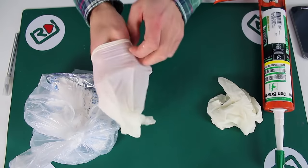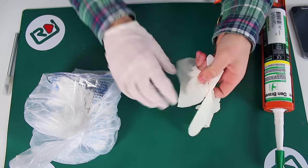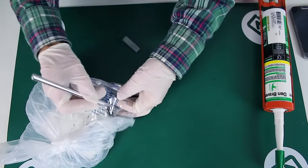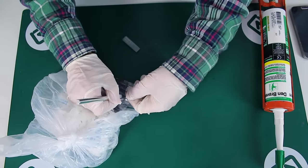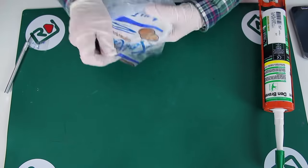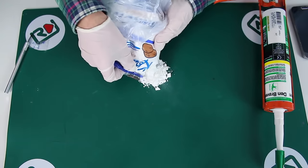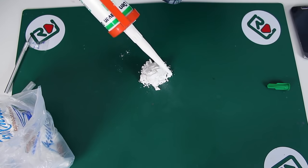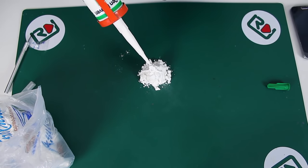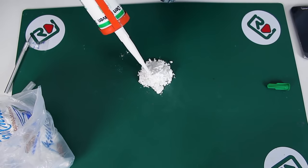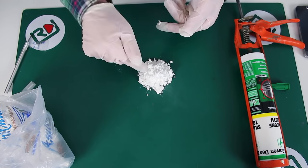First of all, let's put on the gloves. Pour out some starch onto the table. Squeeze out some silicone and mix it well.